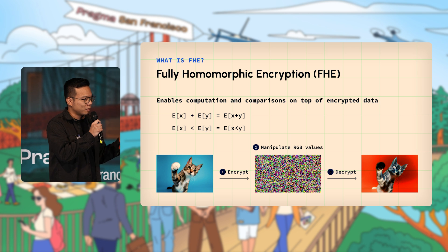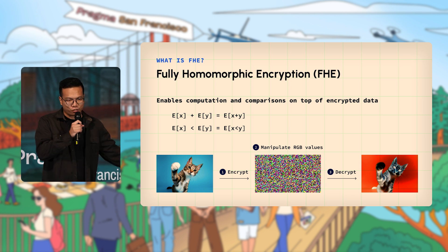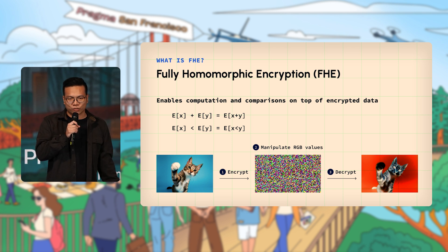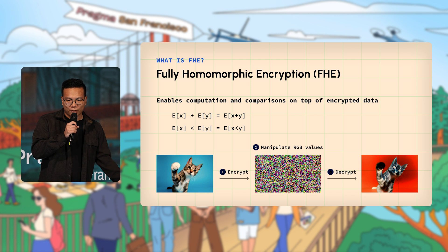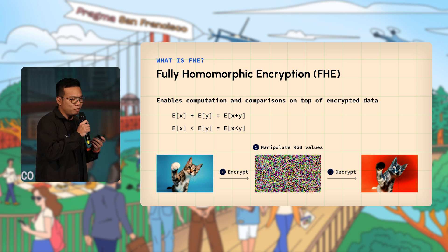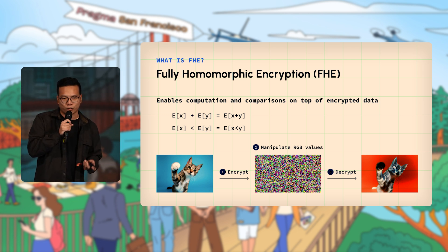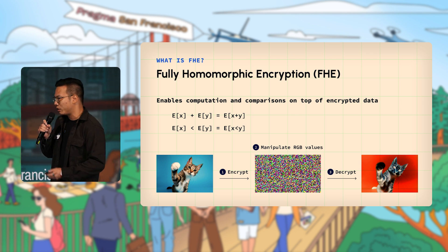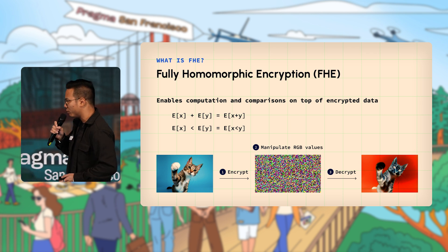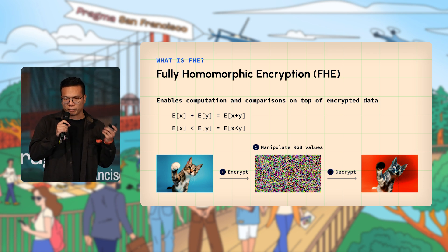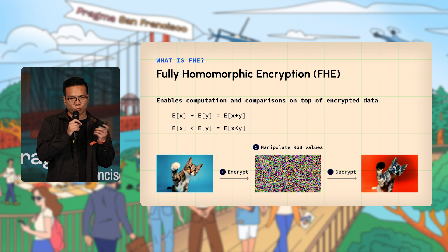Imagine having the ability to encrypt a picture: you can still modify the pixels using math — add, divide, multiply — and by the time you decrypt, you have a filter applied. It almost sounds like magic. This is what FHE enables: computation on top of encrypted data without ever seeing what it is.